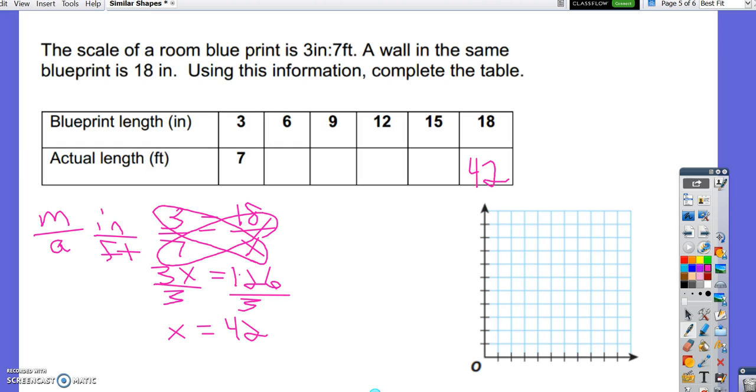And you can set up a proportion for each of the other columns in the table. You can also see that for every 3 inches in the blueprint length, the actual wall is 7 feet. So we're going from 3 to 6 is 3, so from 7 add 7 would be 14. And then when we add another 3 and another 7, we get 21. Another 3 inches is another 7 feet, 28. Another 3 inches and another 7 feet is 35.